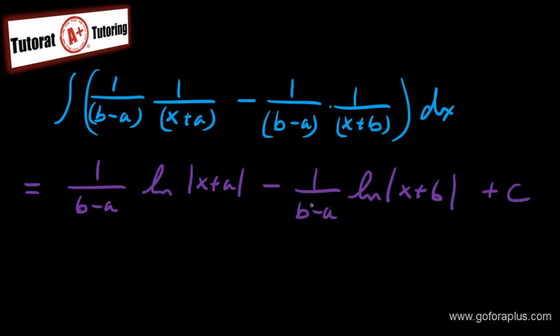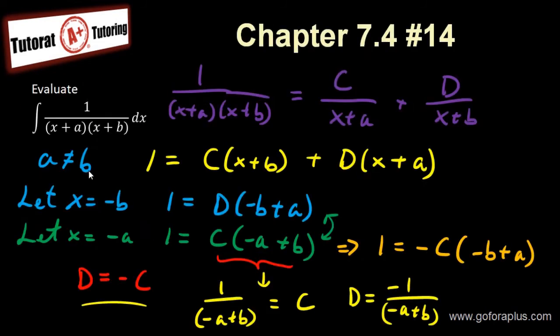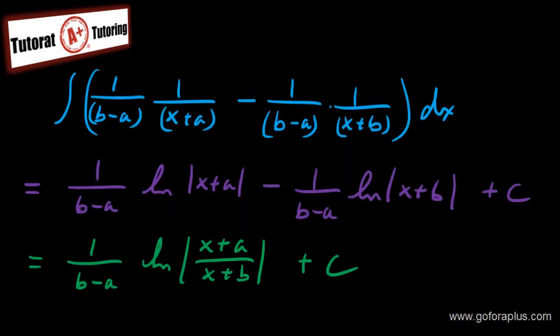Now you can factor out the 1 over (b-a) in front, and then group the ln. So this is going to be 1 over (b-a), ln of (x+a) minus ln of (x+b), which is a division. So (x+a) over (x+b), and then plus c. So this is my final answer when a is not equal to b. This is my answer for a not equal to b.